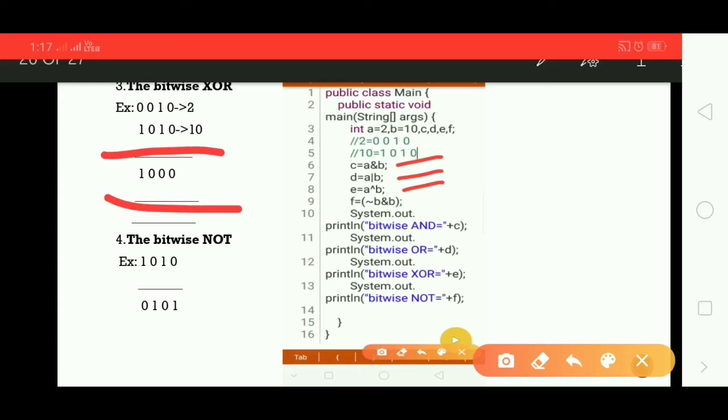Exactly one operand is 1. You can observe 0 and 1 - exactly one operand we have, that is why we got 1 here. But in all other cases we got 0. This is about the bitwise XOR operator.